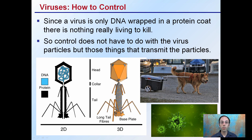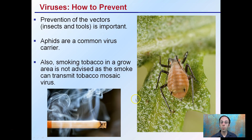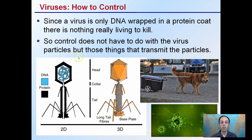For control — since a virus is only DNA wrapped in a protein coat — there's really nothing to kill. You can't really kill a virus because it's not necessarily living to begin with. So control does not have to do with the virus particles themselves, but those things that may transmit the particles, the things that may carry it. A way to prevent virus infection would be to prevent or control your aphids, which is an insect, not necessarily a virus itself, but one that is vectoring that virus particle.